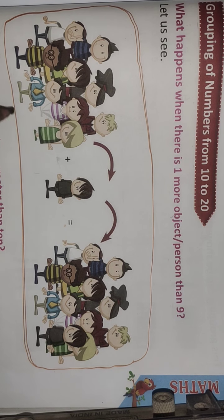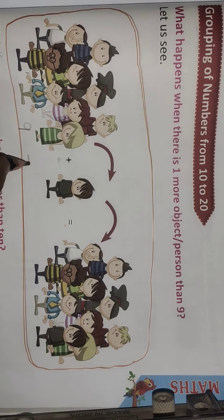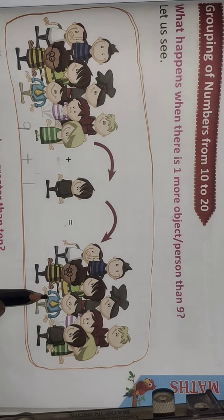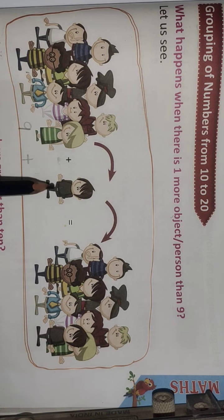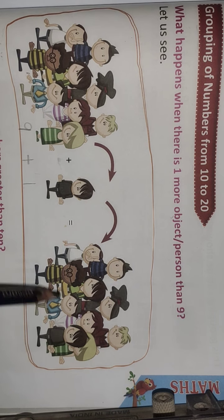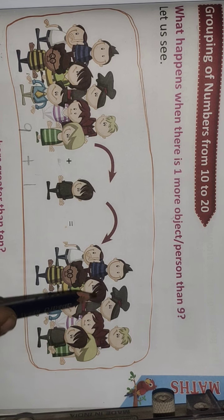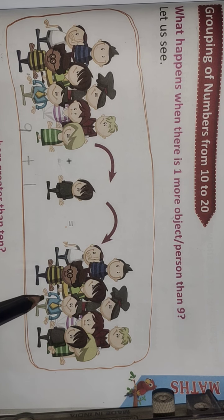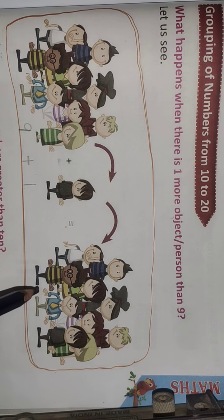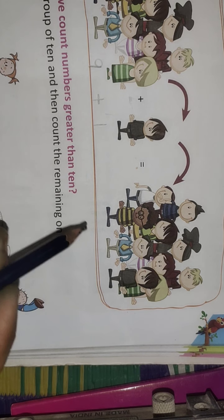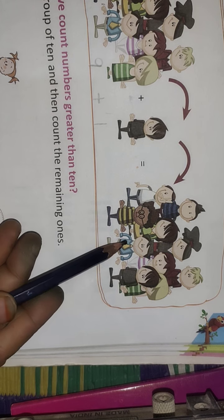9 plus 1 — how much? 9 people are there plus 1. After 9 comes 10. How many pupils? 10 pupils. Let's count them: 1, 2, 3, 4, 5, 6, 7, 8, 9, 10. Total 10 people. This is called a group — one group. In this group there are 10 members.